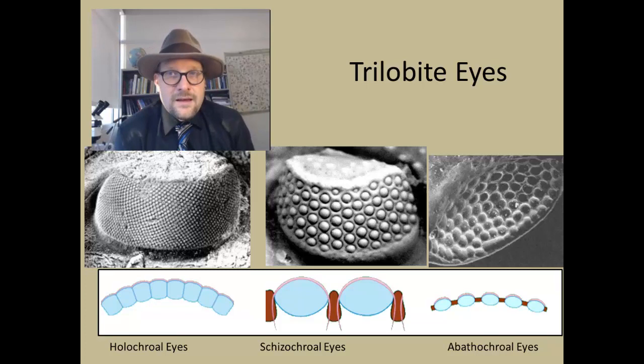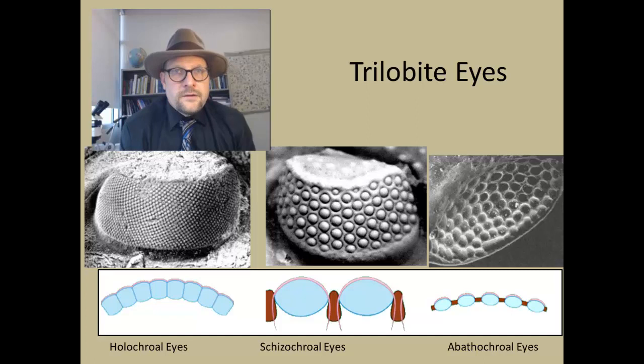Perhaps the most remarkable adaptation of trilobites is the development of eyes—it is the most ancient of the visual systems known. Trilobites have compound eyes like modern crustaceans and insects. However, since their exoskeleton is composed of calcite, which has a high diffraction of light, the crystal lenses that compose the eye need to be arranged just right to prevent any distortion of the images.